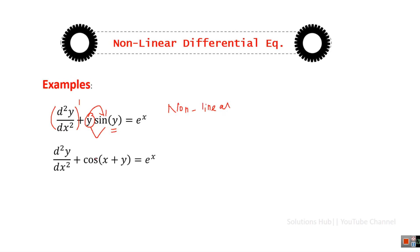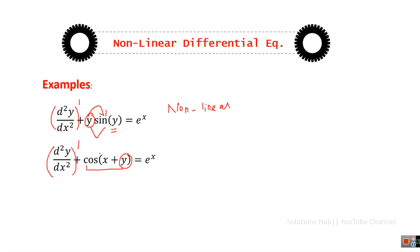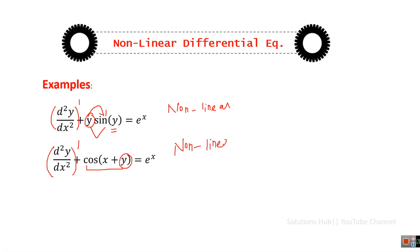In the second nonlinear example, the highest order derivative is 2 and the degree is 1, which is fine. However, there is a term involving cos(x + y), where the dependent variable y appears inside the cosine function. Since cosine is a transcendental function and the dependent variable is involved, this is a nonlinear differential equation.